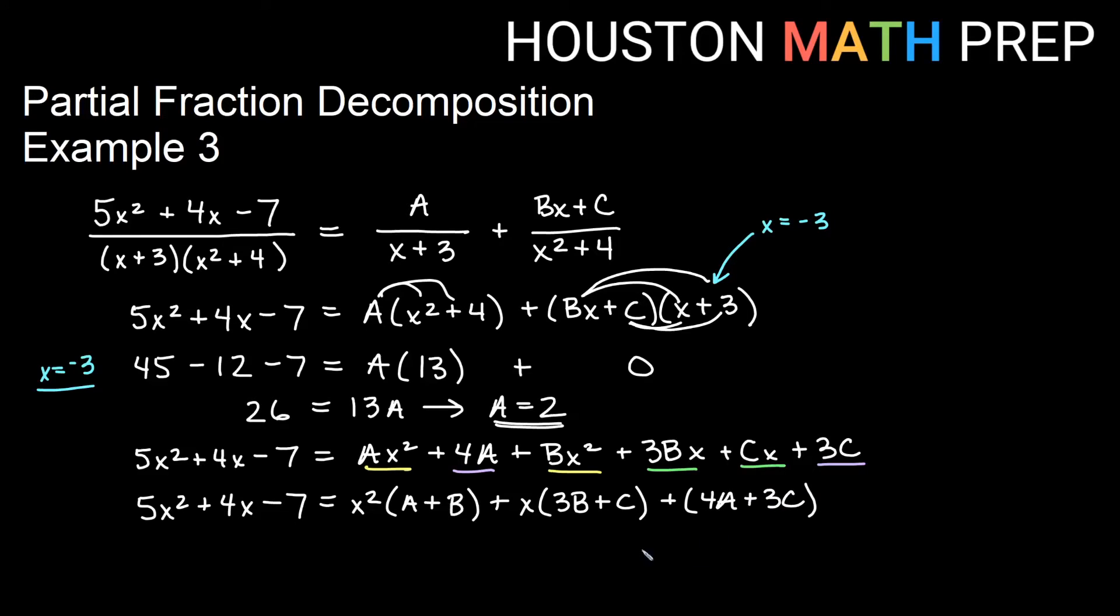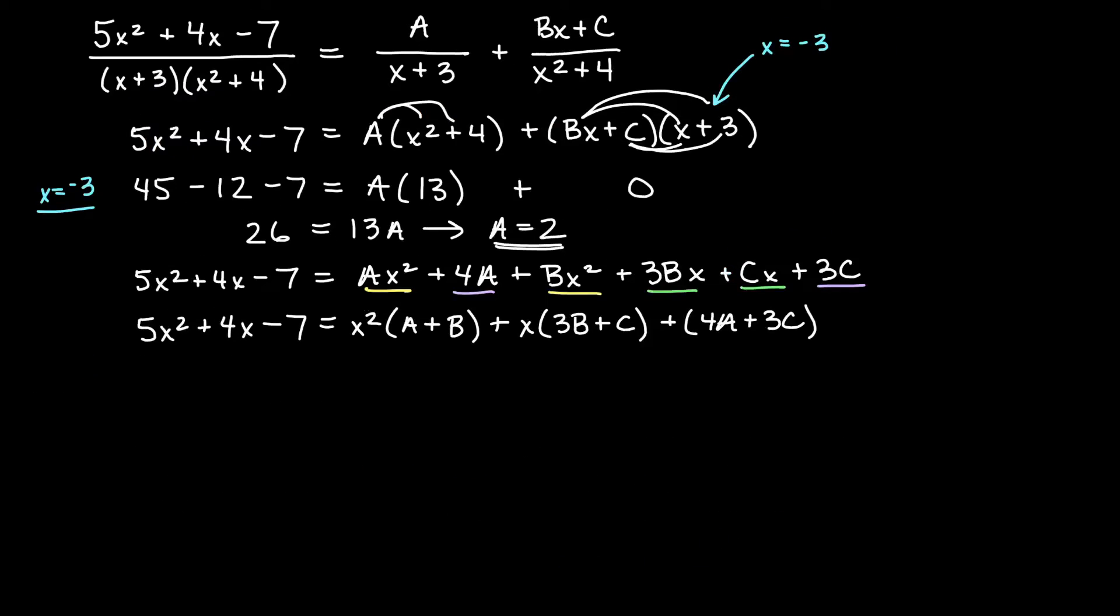Okay, now we'll just compare across the equal sign and everything that is a like term should have the same coefficient. So if I look at my x squareds I have 5 over here. I have A plus B over here. I need the same amount of x squareds on both sides so that tells me A plus B is 5. I need the same amount of x's on both sides. I have 4 over here and I have 3B plus C over here. That tells me that 3B plus C is equal to 4.